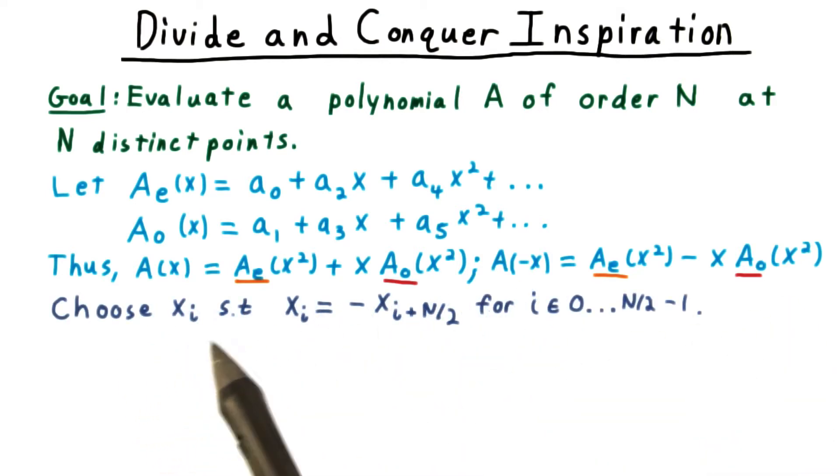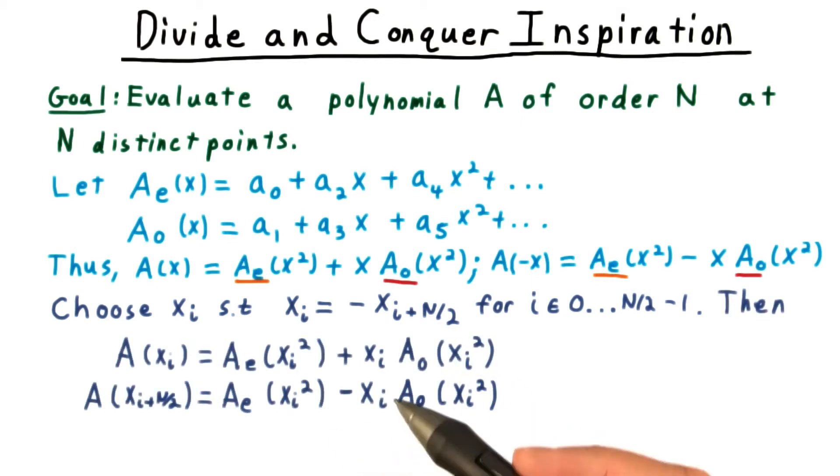More formally, let's say that we choose x sub i such that x sub i is equal to negative x sub i plus N over 2. Then we can compute the values of the polynomial two at a time by computing A_e and A_o at x_i squared, and then using them in these two equations.